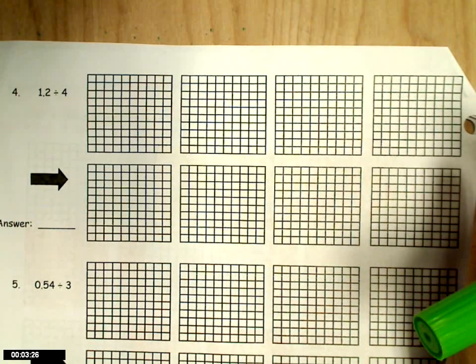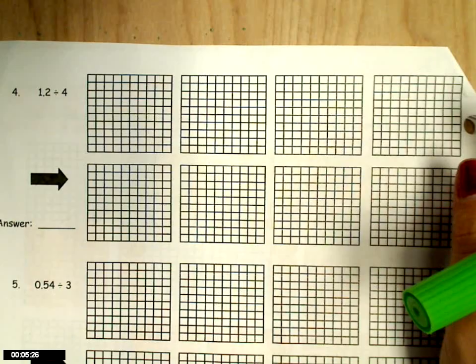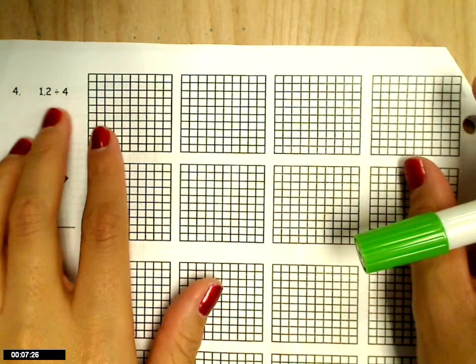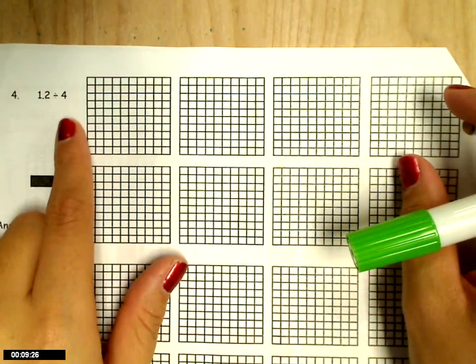Ok, so here's an example of how to model the division of decimals. My first number here is 1 and 2 tenths and it says to divide by 4.